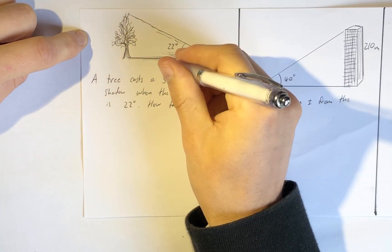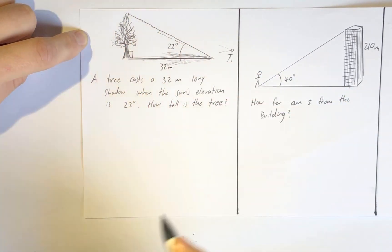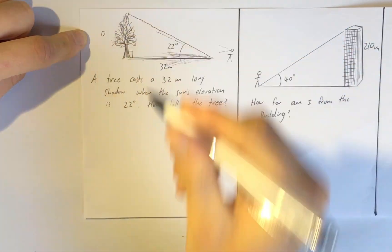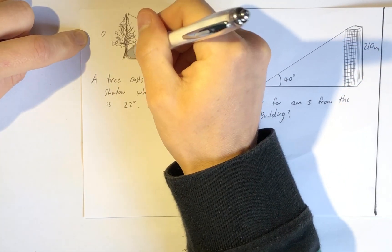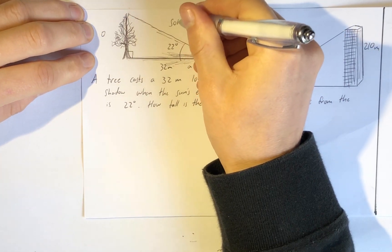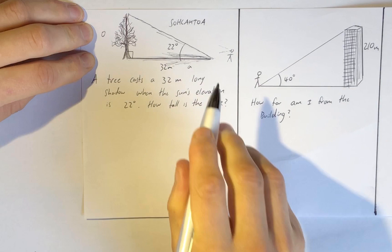The tree cast a 32 meter long shadow so you can see that we have a right angle trig problem. What I want to know is the opposite side length, the height of that tree, and I have been given the adjacent. In my mnemonic SOHCAHTOA, I'm going to be using tan because I'm using O and A.